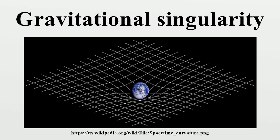Such a singularity may also theoretically become a wormhole. More generally, a spacetime is considered singular if it is geodesically incomplete, meaning that there are freely falling particles whose motion cannot be determined beyond a finite time after reaching the singularity. For example, any observer inside the event horizon of a non-rotating black hole would fall into its center within a finite period of time. The classical version of the Big Bang cosmological model contains a causal singularity at the start of time, where all time-like geodesics have no extensions into the past.